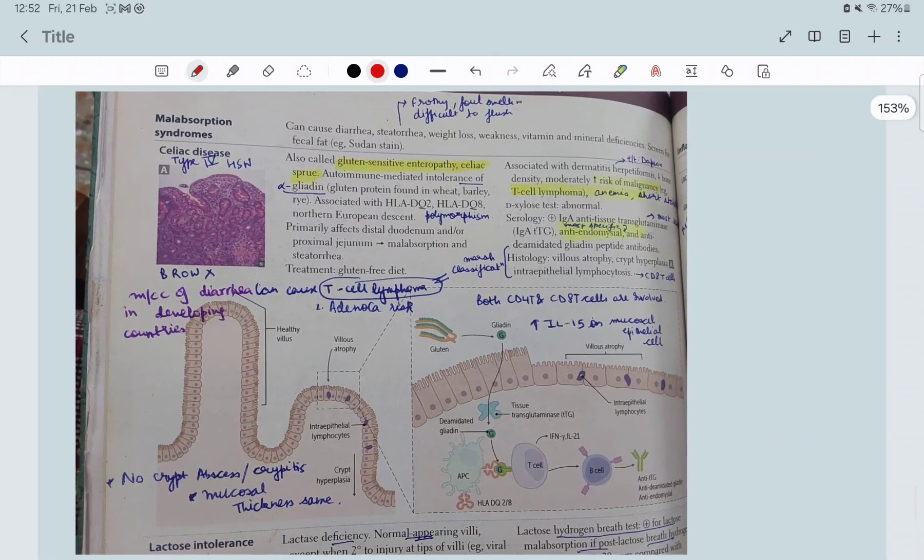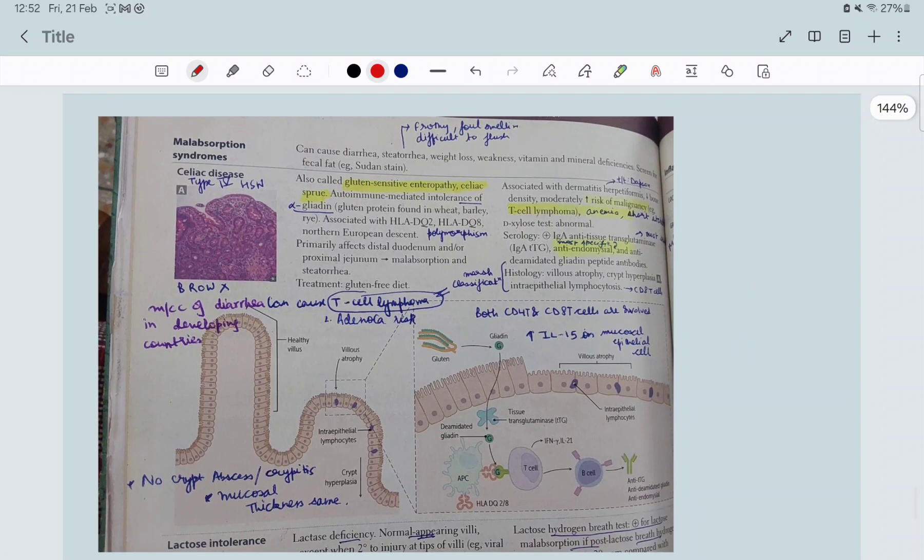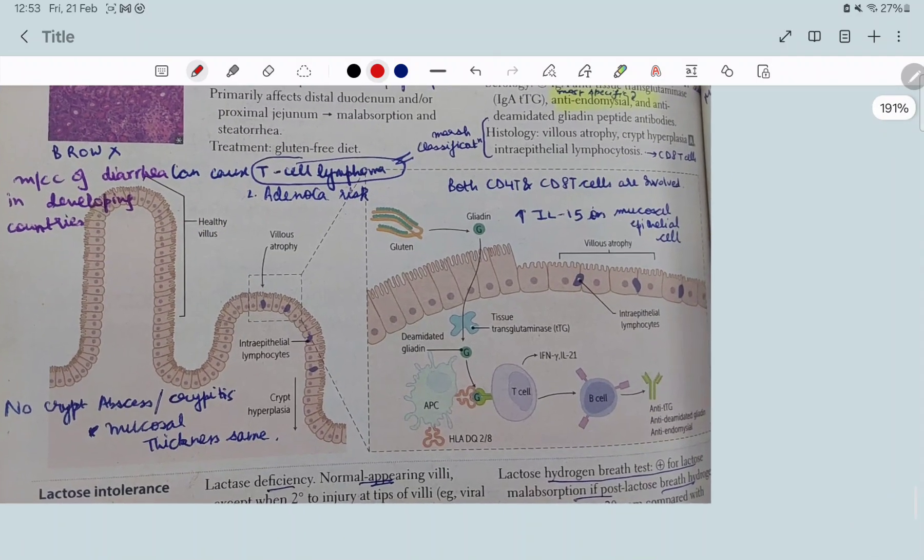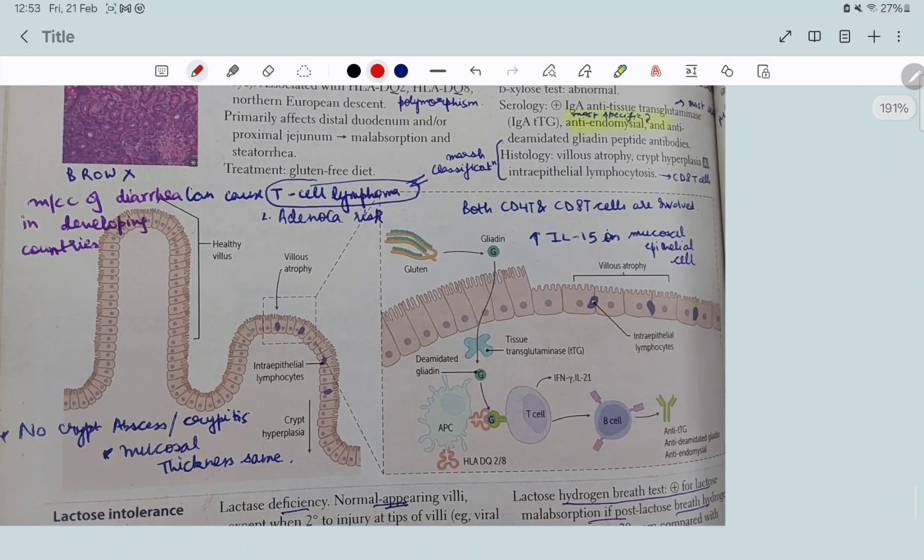And most specific is anti-endomysial. This is a clip from First Aid I used to study from that. Celiac disease is type 4 hypersensitivity, it is the most common cause of diarrhea in developed countries. It causes T-cell lymphoma, adenocarcinoma risk. Just see this picture. What is the histology? This is the normal healthy villus. In celiac disease there is villus atrophy.